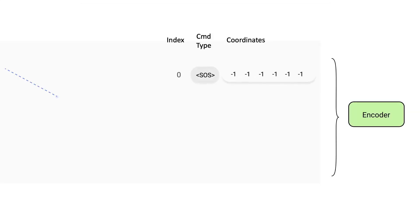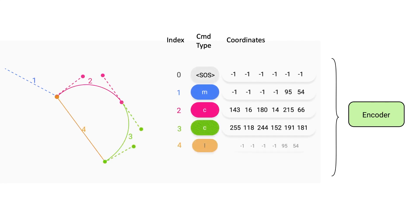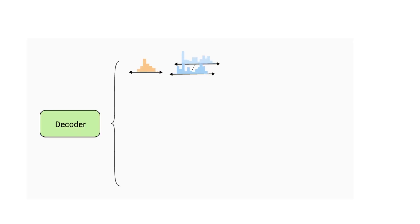To learn deeper representations of SVG images, we first encode it by embedding each internal command using the sequence index, command type, and associated coordinates. The decoder can then predict the probability distribution of each command type and coordinate from which we obtain the output SVG shape.